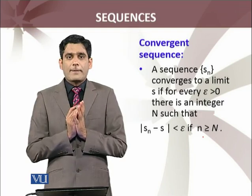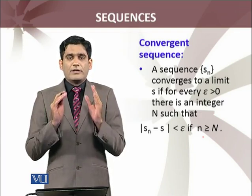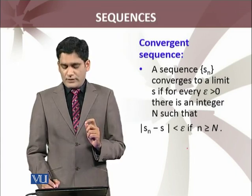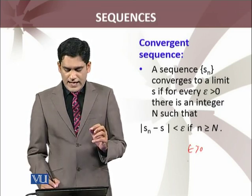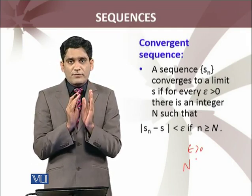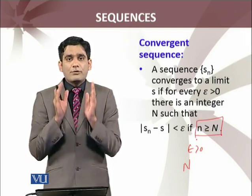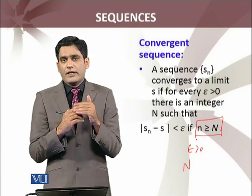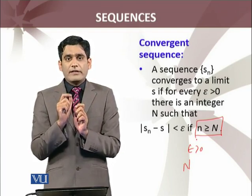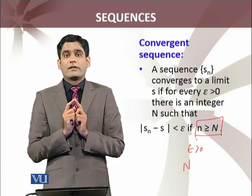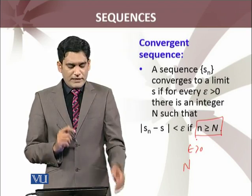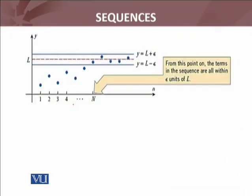So what do we mean by the convergence of a sequence? A convergent sequence is one such that for every epsilon greater than 0 — epsilon is very important here — I must have an integer N such that the absolute value of the difference between the limit of the sequence and the terms of the sequence is less than epsilon, whenever n is greater than N. Let me explain graphically what this means.